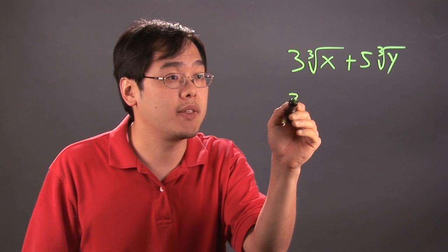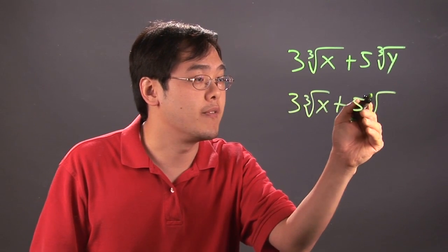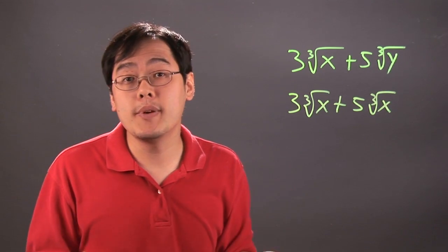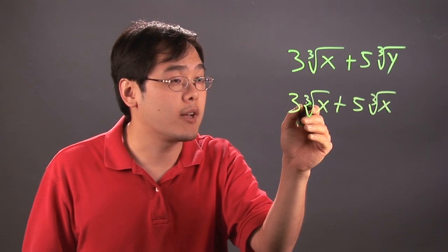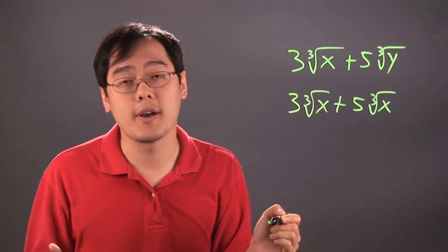However, if you have something like this, 3 cube root of x plus 5 cube root of x as well, then you're in business because they got the same radical but they also have the same term underneath. That's when you can combine them.